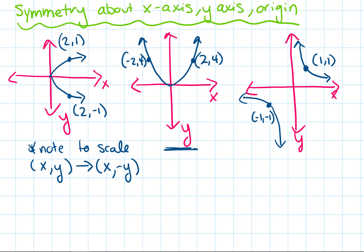Moving to the second example, we have symmetry about the y-axis. That means if we start with one coordinate (x, y), the symmetrical coordinate has the opposite sign for the x and the same sign for the y. Look at the coordinates shown: we have negative 2, 4. The y values stay the same, but the x values have the opposite sign — negative 2 on the left-hand side, positive 2 on the right-hand side.